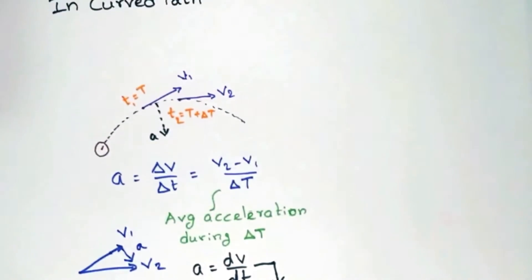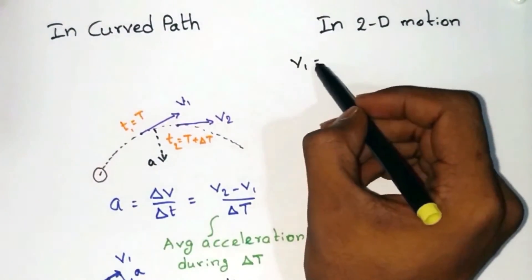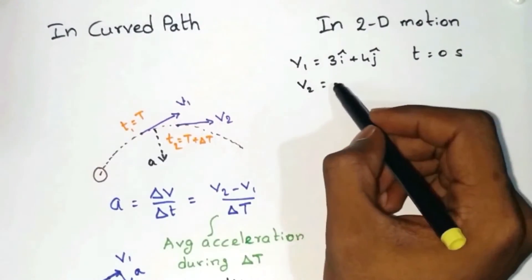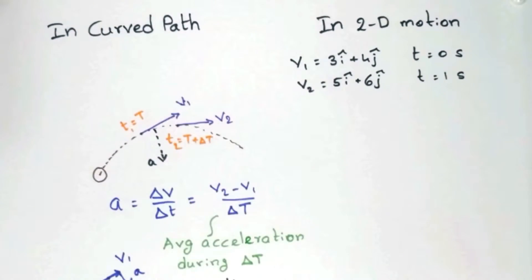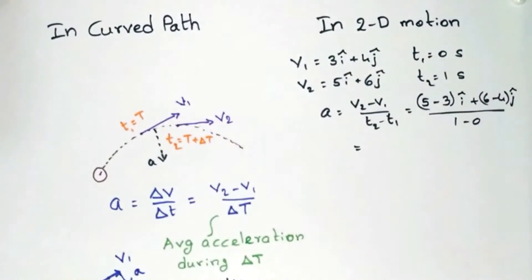Now let's consider an example of 2D motion where an object has a velocity of 3 i-cap plus 4 j-cap meter per second at t equals 0 seconds, and 5 i-cap plus 6 j-cap after 1 second. Then the acceleration can be calculated to be 2 i-cap plus 2 j-cap meter per second square.